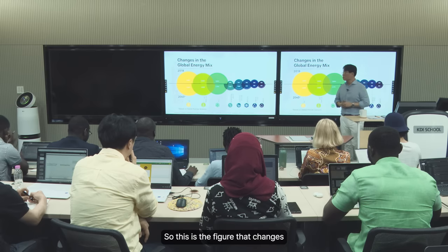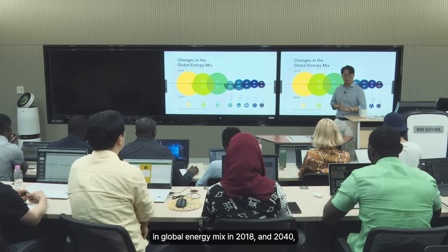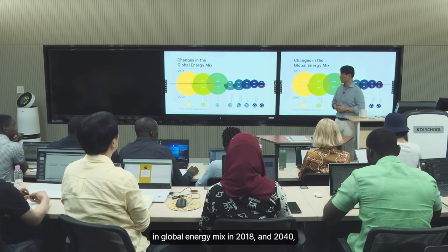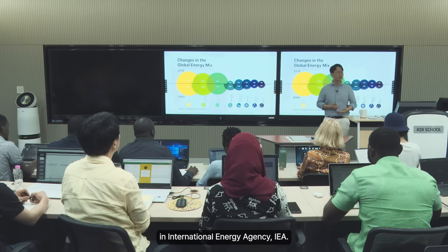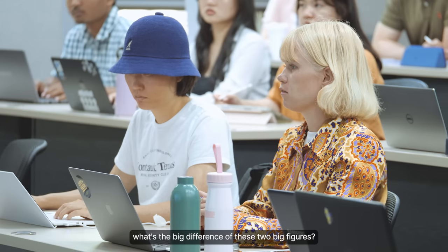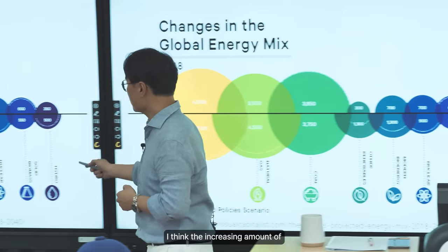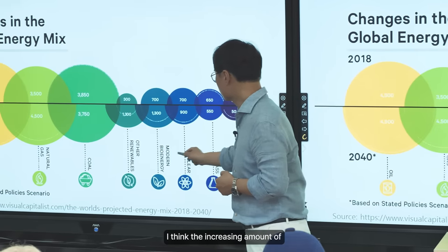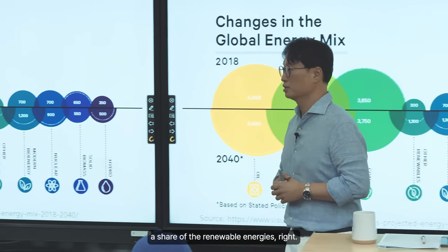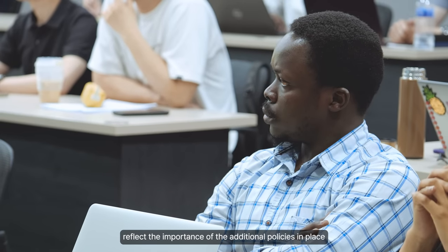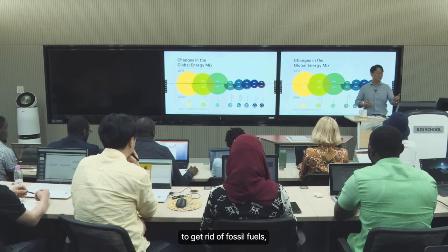This figure shows the global energy mix in 2018 and 2040, based on the stated policy scenarios of the International Energy Agency (IEA). The big difference between these two figures is the increasing share of renewable energy, and this figure reflects the importance of additional policies needed to get rid of fossil fuels.